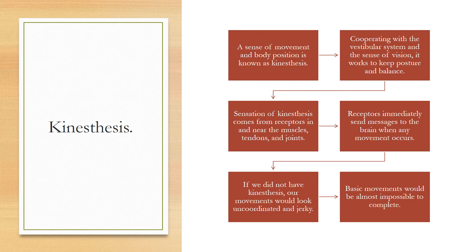A sense of movement and body position is known as kinesthesia. Cooperating with the vestibular system — which handles balance — and the sense of vision, it works to keep our posture and balance. This sensation comes from receptors in and near the muscles, tendons, and joints. When you move, walk, or turn your head, receptors immediately send messages to the brain. Without this sense, movements would look uncoordinated and jerky, and basic actions like walking or picking something up could be impossible.